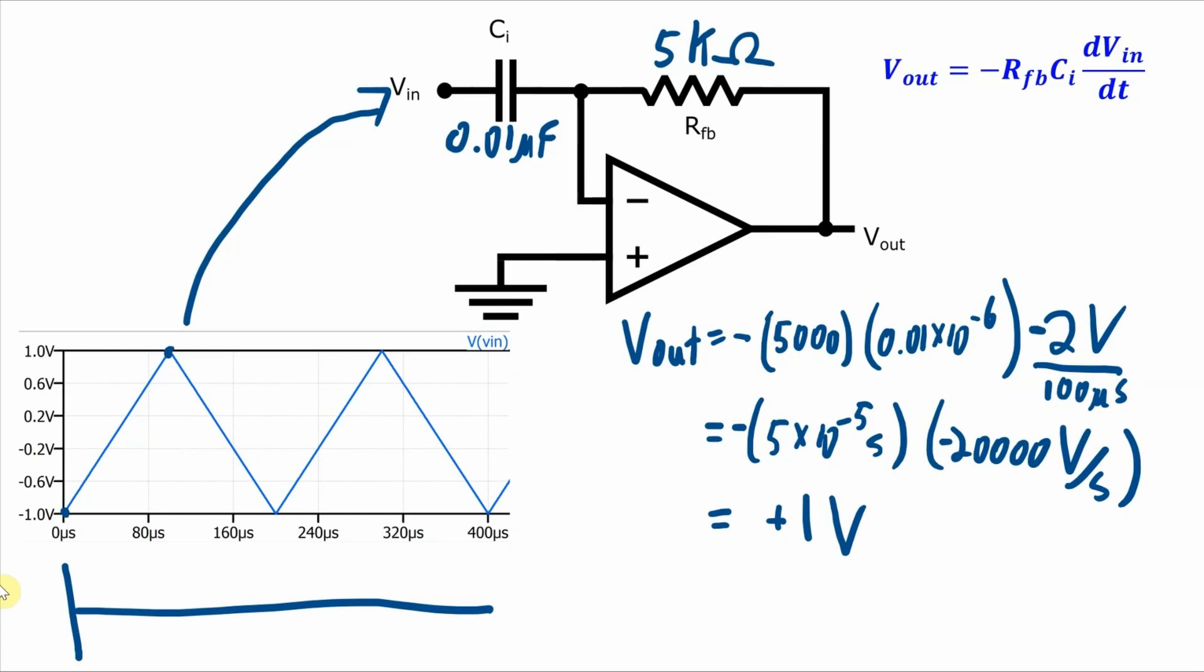So over time from zero to a hundred microseconds, Vout will be at negative one volt. And then at a hundred microseconds, it's going to change to one volt.